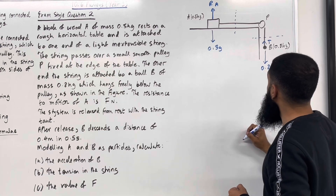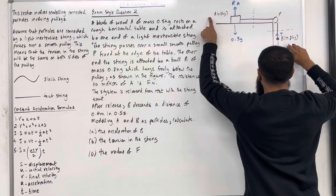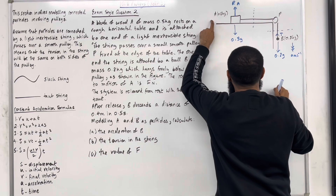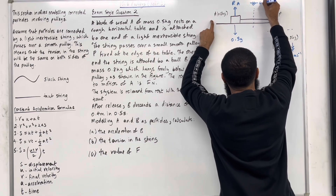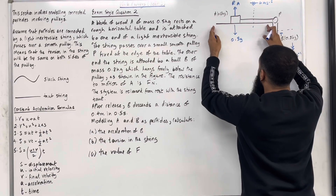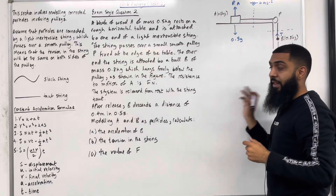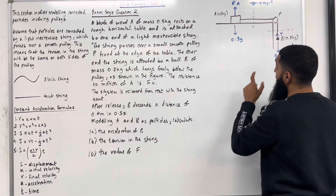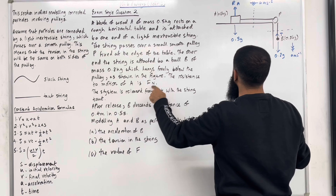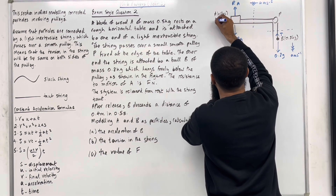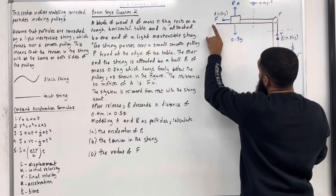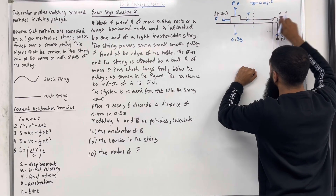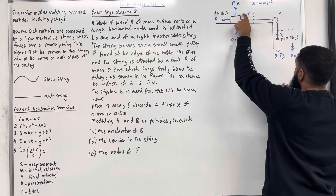Let's move on to particle A. For particle A we have the weight acting vertically downwards, given by 0.5g. Since particle A is in contact with the surface, the surface exerts a normal reaction on particle A acting vertically upwards — let's call it R_A. Particle B is heavier than particle A, so B accelerates vertically downwards at a m/s², and particle A accelerates to the right at a m/s². Since the table is rough, friction opposes motion and acts to the left on A, given by F Newtons. Due to this friction force, there is a tension in the string acting to the right for particle A. Since the pulley is smooth, the tension is the same throughout the string — we call it T.